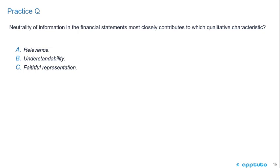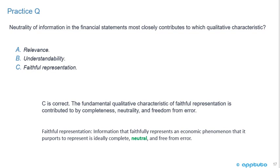Practice question: Neutrality of information in financial statements most closely contributes to which qualitative characteristic? A. Relevance, B. Understandability, or C. Faithful representation. The correct answer is C. The fundamental qualitative characteristic of faithful representation is contributed to by completeness, neutrality, and freedom from error. Information that faithfully represents an economic phenomenon is ideally complete, neutral, and free from error. This type of question demonstrates the need to be very precise with your memorization.